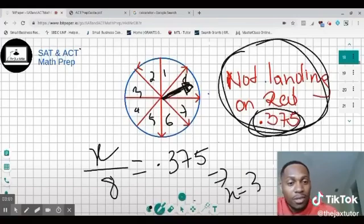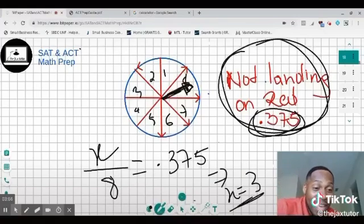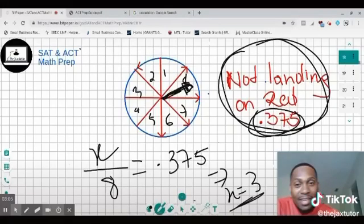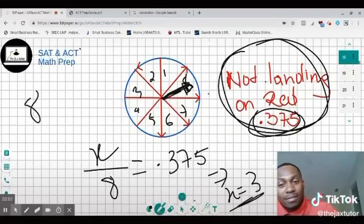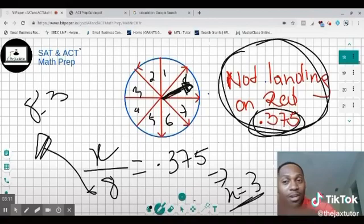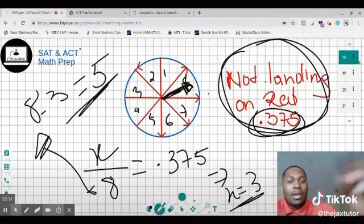So we know 3 of them are not red. How many of them are red? So 8, we have a total of 8, 3 of them are not red. Minus 3 that are not red. And the ones that are red, 5.